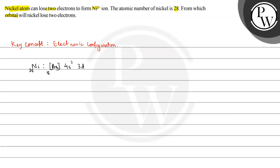We can write it like this: Argon 18, 3d⁸ 4s². Here we can see that 4s is fully filled.